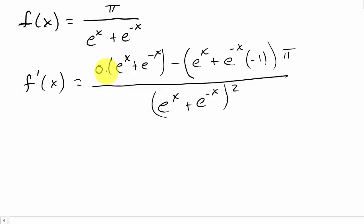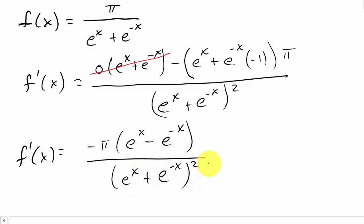That goes out. So I'm left with f prime of x is equal to negative pi times e to the x minus e to the negative x over e to the x plus e to the negative x squared.